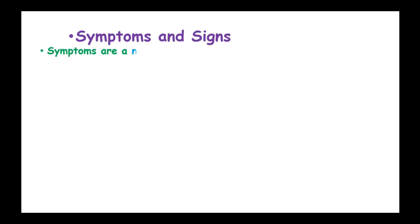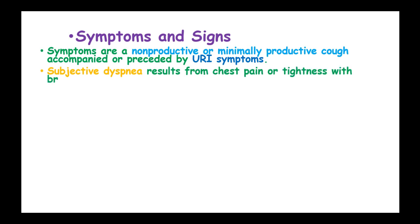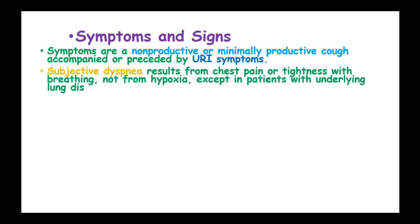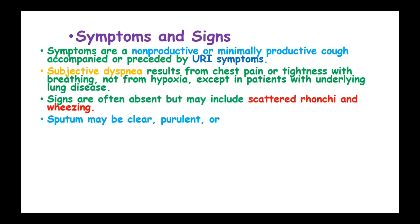The signs and symptoms of acute bronchitis include an unproductive or minimally productive cough, which is accompanied or preceded by upper respiratory infection symptoms. Subjective dyspnea results from chest pain and tightness with breathing, not from hypoxia except in patients with underlying lung disease. Signs are often absent but may include scattered rhonchi and wheezing.